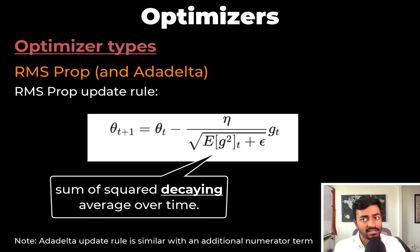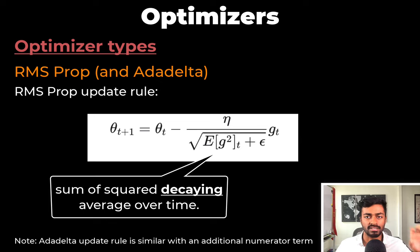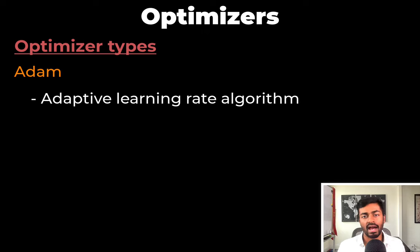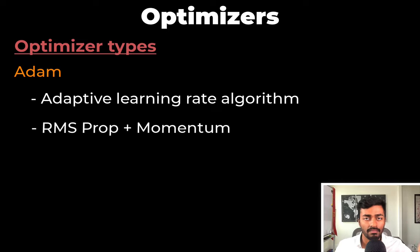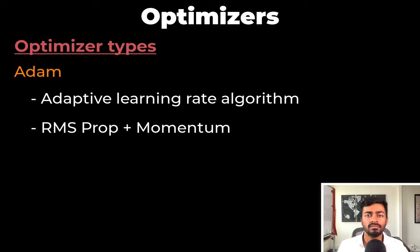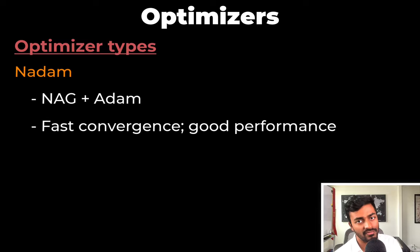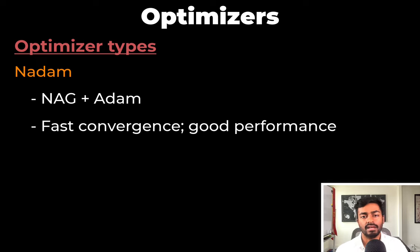One of them was Adadelta and the other was RMSprop. Both have slight modifications to ensure that the denominator does not explode over time, allowing stable convergence. Next is Adam — another adaptive learning rate algorithm that does RMSprop but also adds some momentum. It performs well on many problems and is one of the most common optimizers used today. Then we have Nadam, which is a combination of the Nesterov Accelerated Gradient and Adam, offering fast convergence and good general performance.